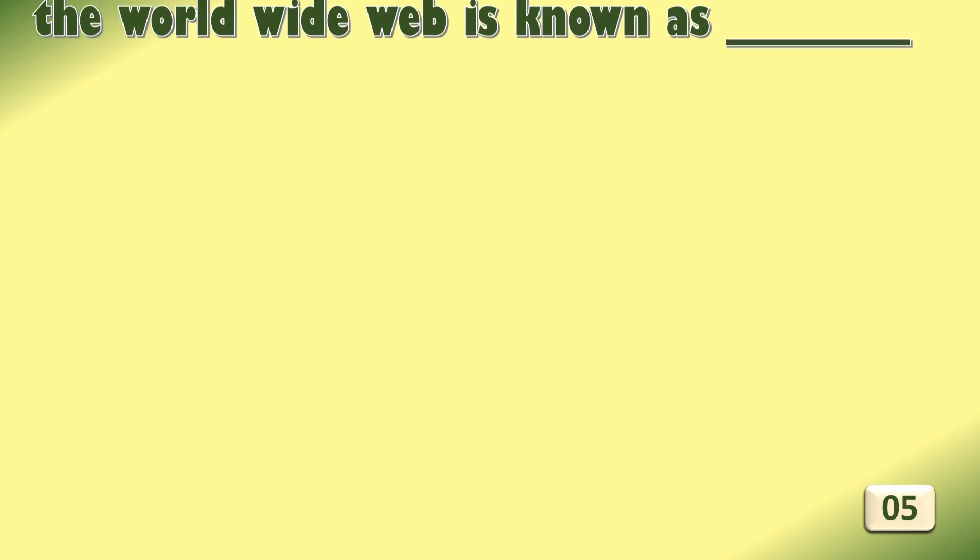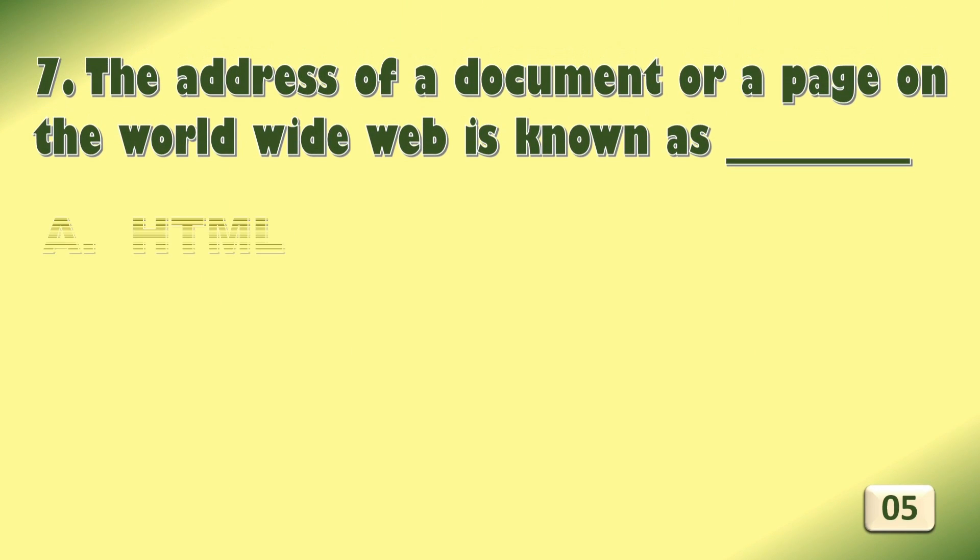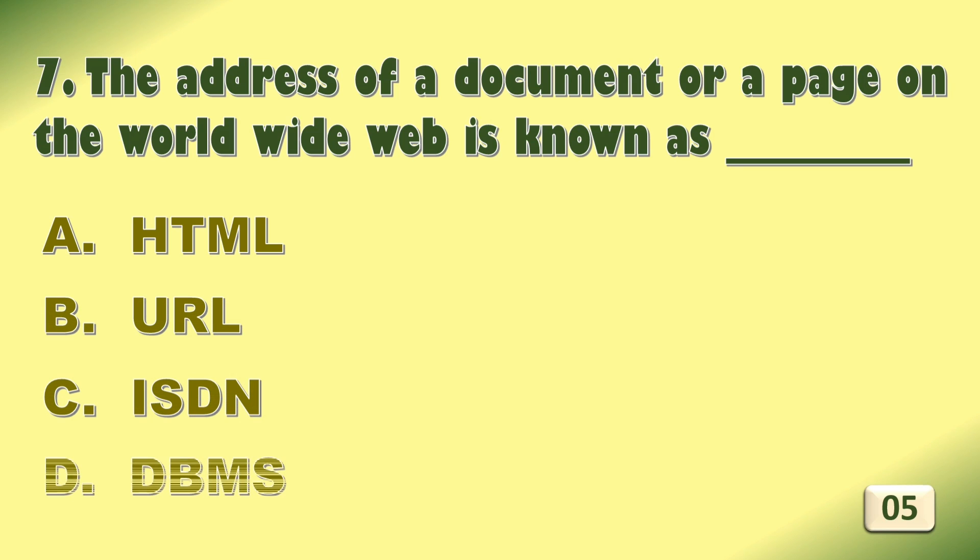The address of a document or a page on the World Wide Web is known as Option A. HTML, B. URL, C. ISDN, or D. DBMS.